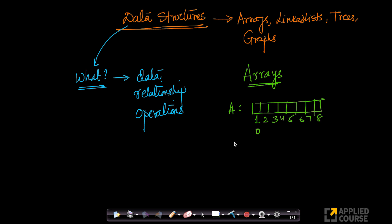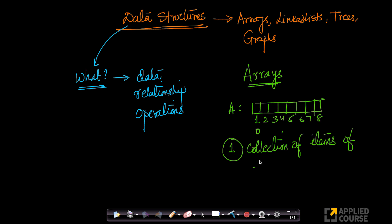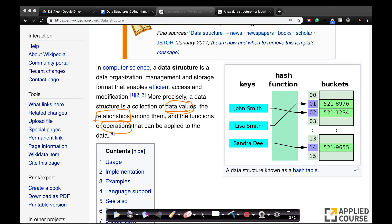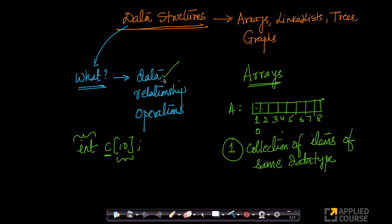In an array, there are a couple of interesting properties. Number one: an array is basically a collection of items of the same data type. For example, in C, when I say int C[10], I am creating an array named C which can hold up to 10 elements, and each of those elements is of the same data type — int. So array is a collection of items of same data type. That covers the first part: a collection of data values.